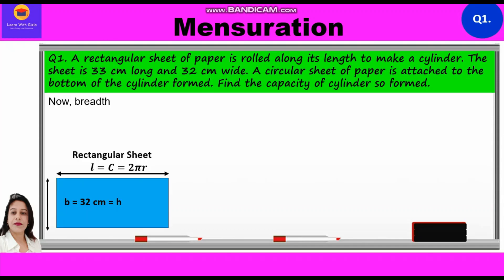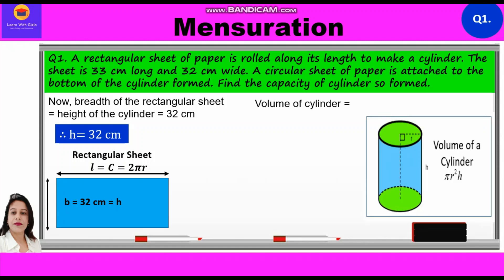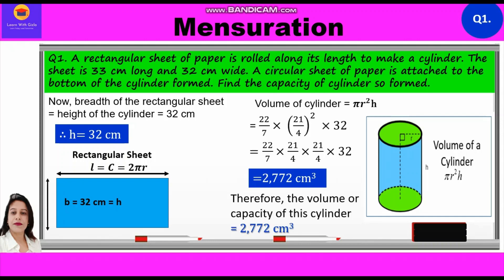Now, the breadth of the rectangular sheet is equal to the height of the cylinder, which is equal to 32 cm. Volume of the cylinder is pi r squared h. Substituting the values: 22 by 7 into (21 by 4) squared into 32, which equals 22 by 7 into 21 by 4 into 21 by 4 into 32, which equals 2772 cm³. Therefore, the volume or capacity of this cylinder is 2772 cm³.